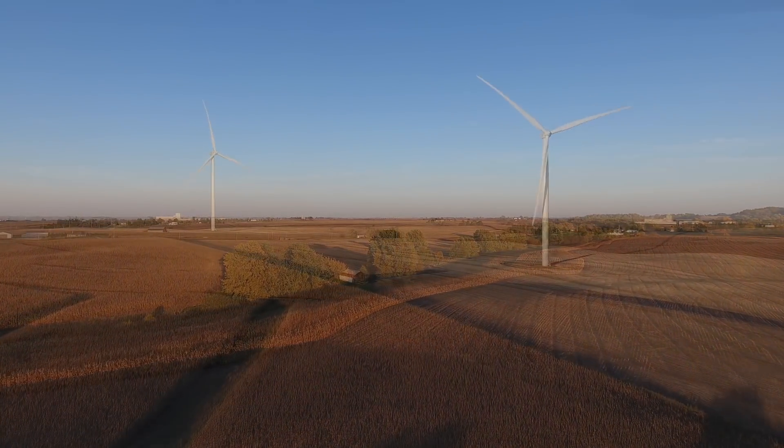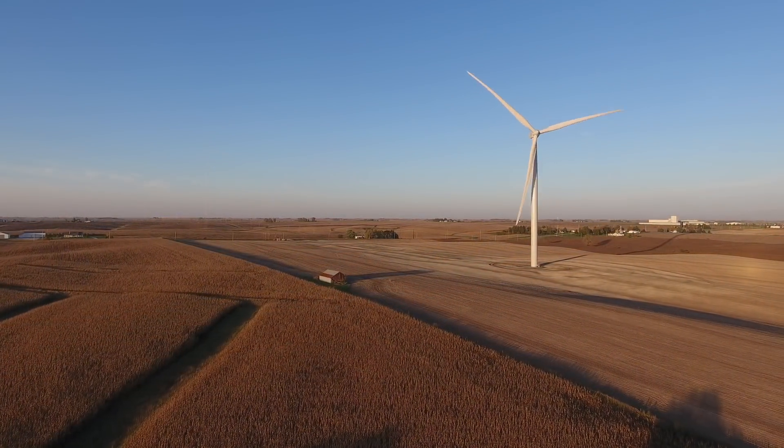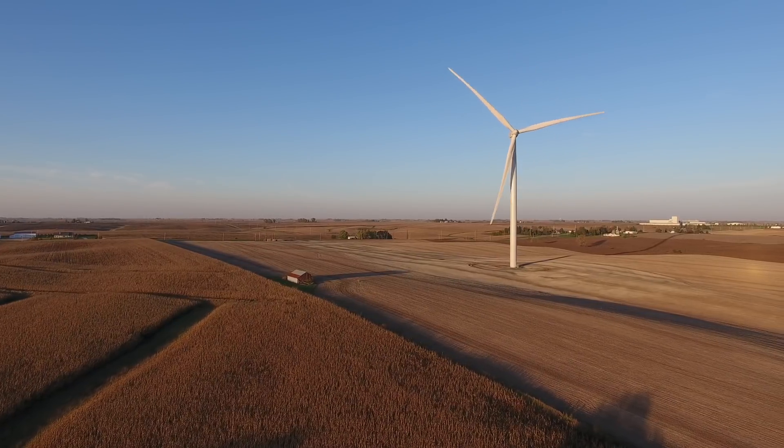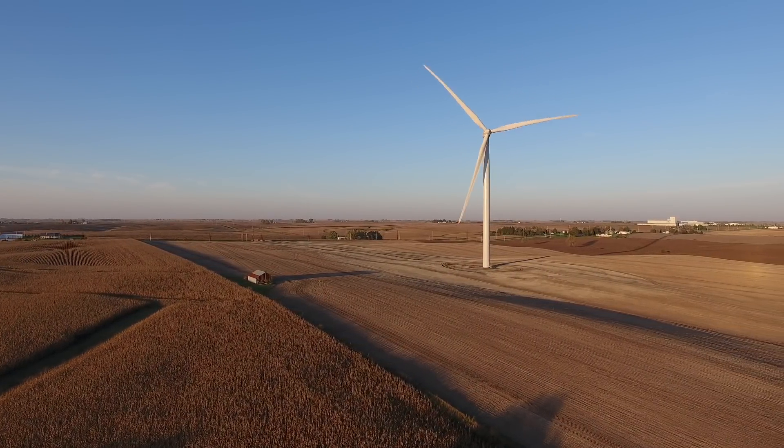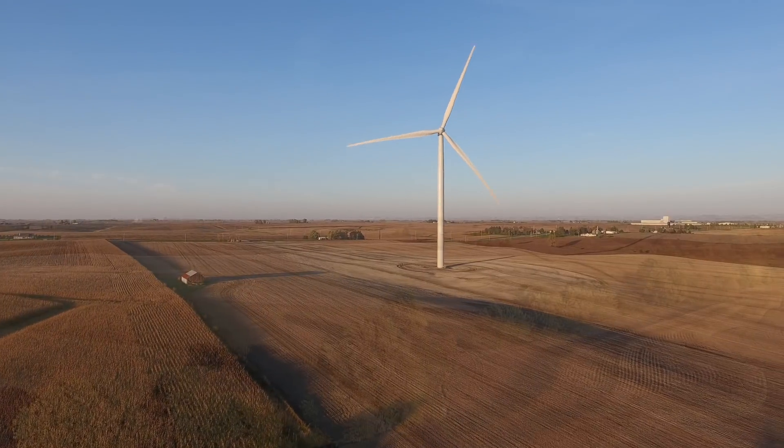The ancient Greek scholar Eratosthenes, assuming that the Earth was a sphere, used careful timing and shadows to accurately approximate the Earth's size.